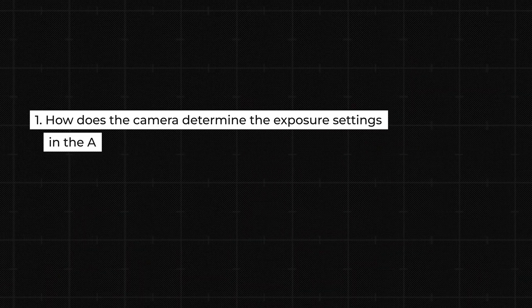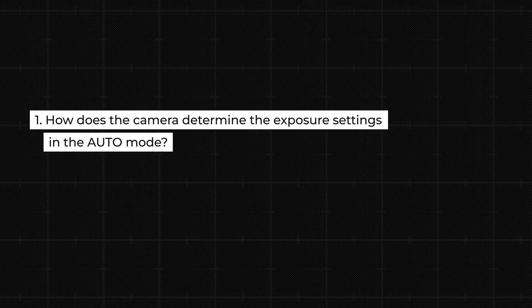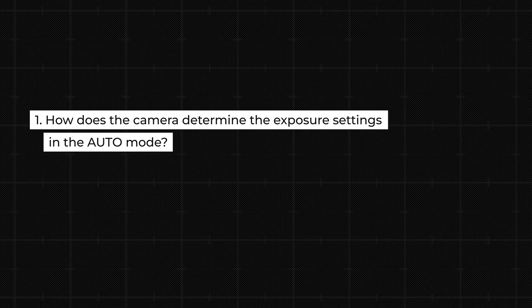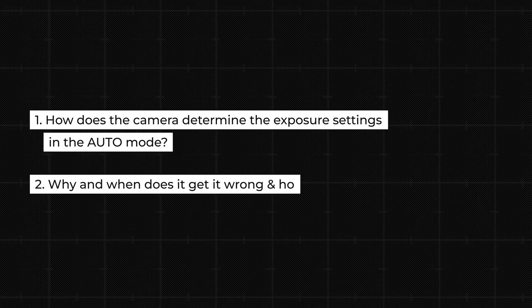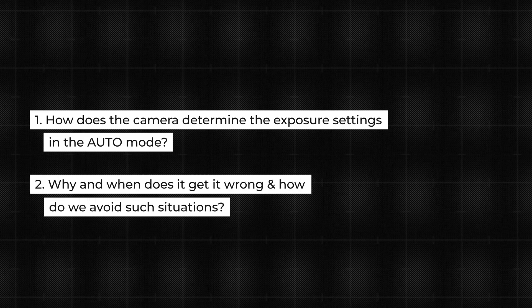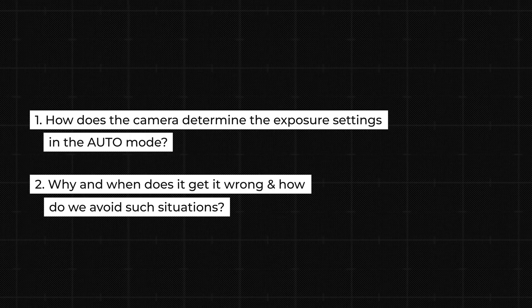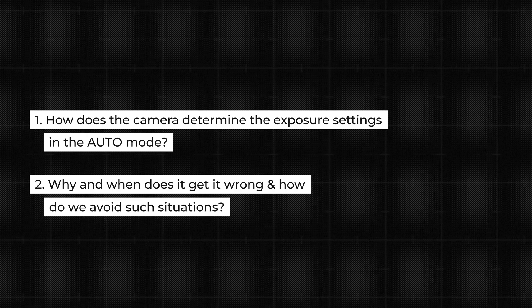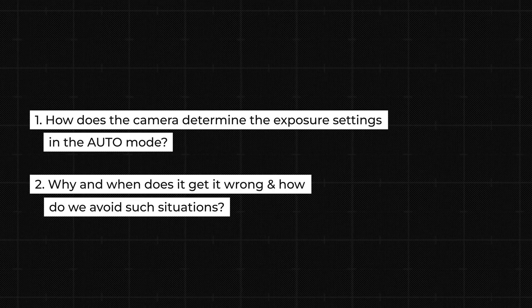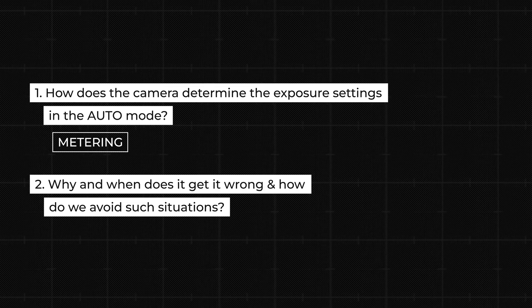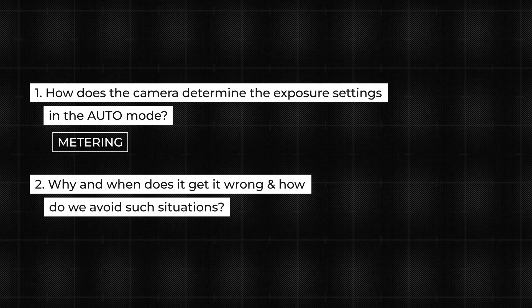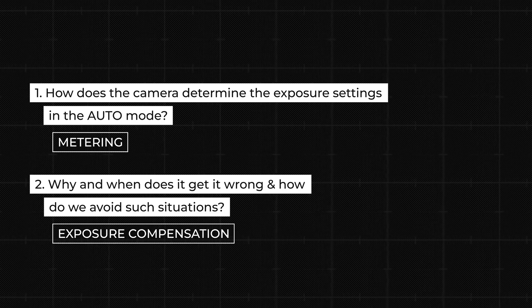The first question is: how does the camera determine its exposure settings when it is photographing in auto mode? And question number two: why does it get it wrong? When does it get it wrong, and how do we avoid such situations? The answer to the first question is the first part of the topic, and that is metering.